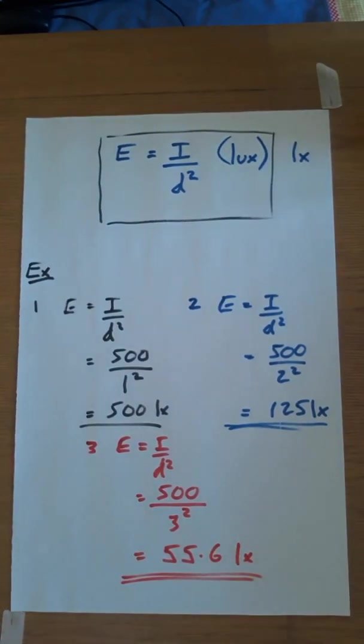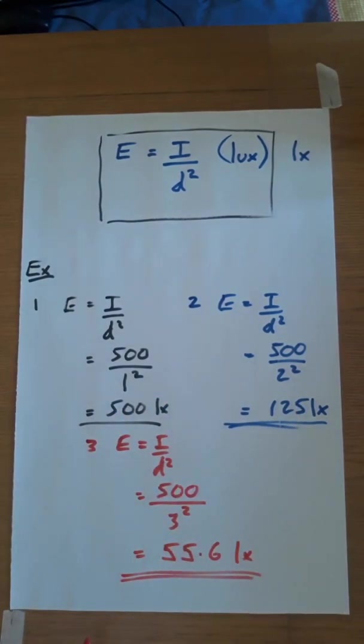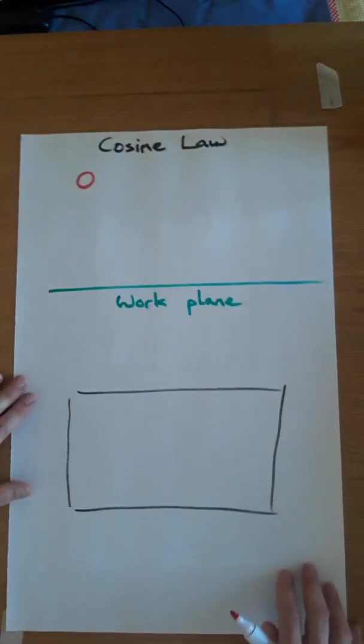So what this shows is that the further we get away from the point of the light source, then the less the illuminance on the surface is going to be. OK, that was a high speed look at the inverse square law. Let's move on to the cosine law.